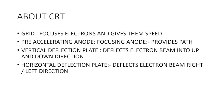Here are some important summary points. First, the grid focuses electrons and provides speed. Second, the pre-accelerating anode provides path and speed to the electrons. Third, the vertical deflection plate deflects the electron beam up or down. Fourth, the horizontal deflection plate deflects the electron beam right or left. That is all for today. I hope you enjoyed this video. You can ask doubts in the comment section. Take care and goodbye.